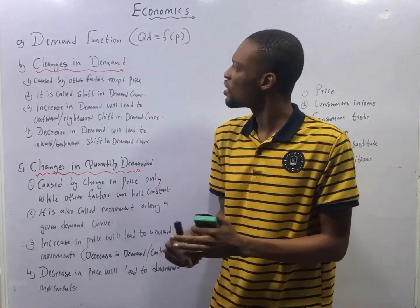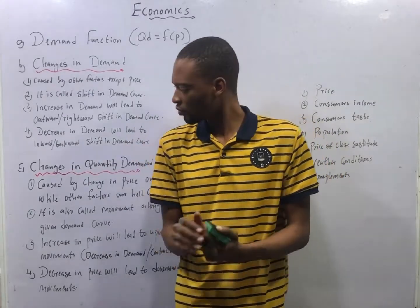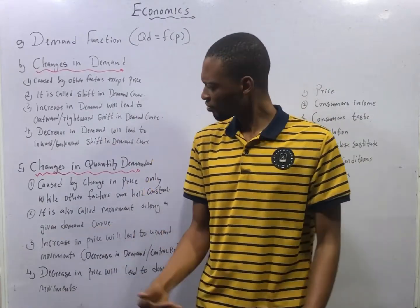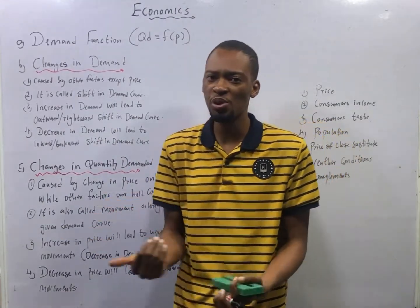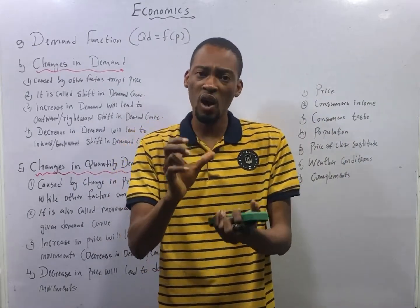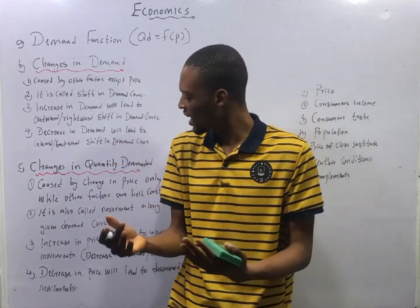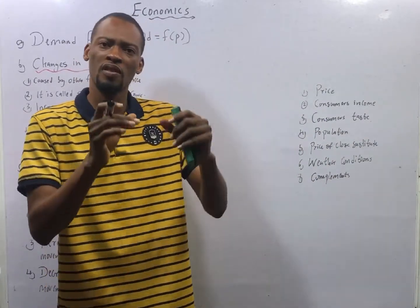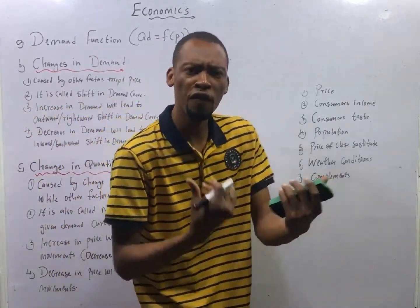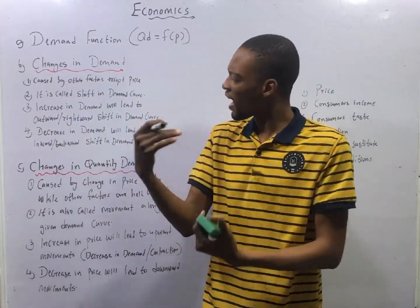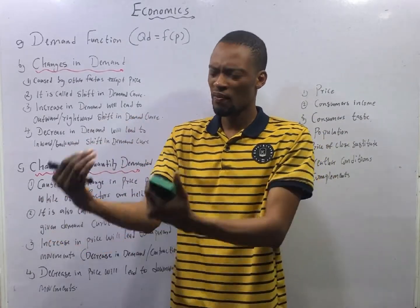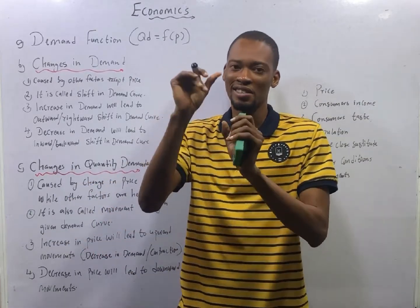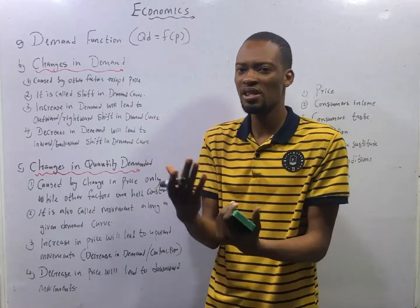In this episode, we shall be looking at Demand Function, Changes in Quantity Demanded, and Changes in Demand. In the previous episode, we were able to introduce Demand and the Law of Demand, and we were also able to look at the normal demand curve and the abnormal demand curve. The Law of Demand states that all things being equal, the higher the price of a commodity, the lower the quantity demanded, and the lower the price of a commodity, the higher the quantity demanded.